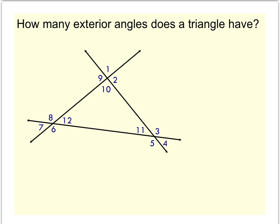...is one that's made by extending one side of a triangle. In other words, angle 2 is an exterior angle because we just extended this one side. Angle 9 is also an exterior angle because it exists by extending this other side.